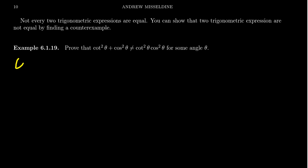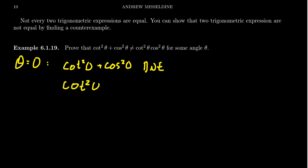The idea is to find a specific angle where the two functions disagree. You might try experimenting — like if you take theta equal to zero, the left-hand side gives you cotangent squared of zero plus cosine squared of zero. But cotangent is actually undefined at zero, so this does not exist. And the right-hand side, cotangent squared of zero times cosine squared of zero, also does not exist. So both sides are undefined — you're outside the domain of the functions — and this gives you nothing really.